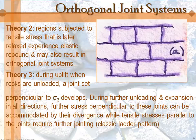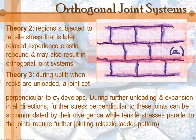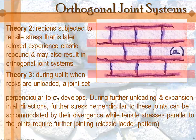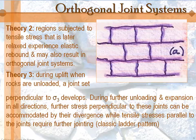A third theory is that when rocks are unloaded during uplift, you can have a joint set that's perpendicular to your sigma-3. That's the natural development — tensile joints pop open perpendicular to sigma-3. As more unloading occurs and the whole layer expands in all directions, you get stresses perpendicular to sigma-3, but also perpendicular to that direction as well.